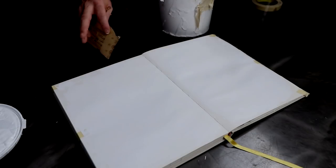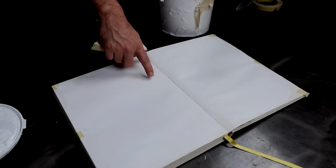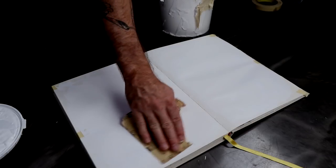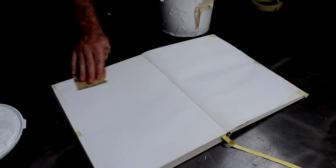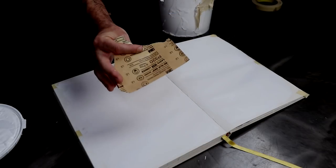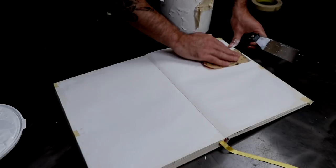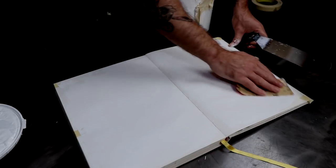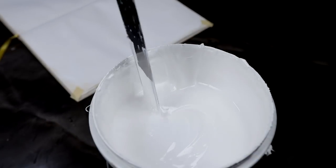Once the first layer is dry, and it will be dry pretty fast because this is water-based and will dry within a few minutes, I'll just go lightly and sand it a little bit. This is a very fine 320 sandpaper. I just sand it to create some tooth, some texture, so that the second layer grabs well.